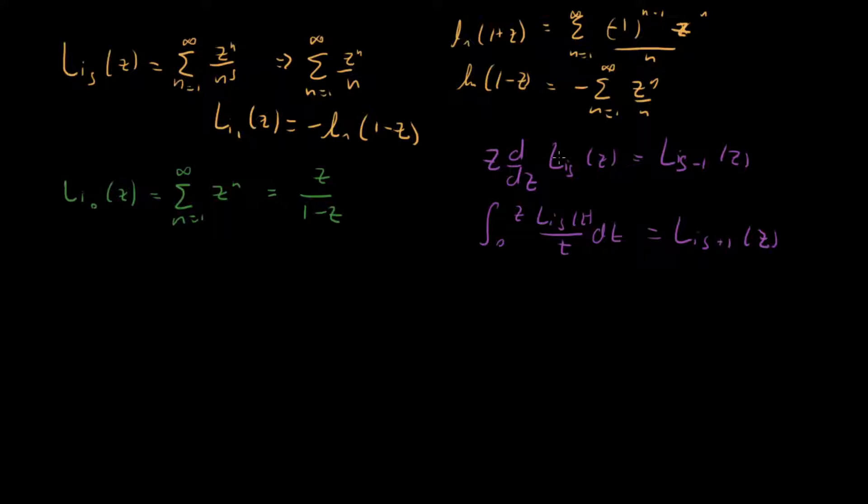So now we can actually use some of these properties here to iterate through these and figure out what we get for a whole range of different values. So let's maybe try and do Li sub minus 1 of z. Li sub minus 1 of z, that's going to be equal to z dz of this guy right here, z over 1 minus z. And we know how to take this derivative right here. And what we get is z over 1 minus z squared.